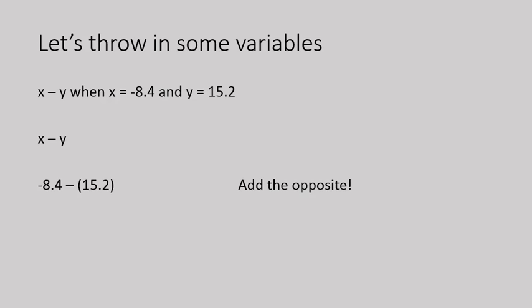When you have a subtraction question, you can always change it into adding the opposite. So instead of negative 8.4 minus positive 15.2, we'll change it to negative 8.4 plus negative 15.2. And now we have an addition question, but we're adding a negative plus a negative, so our answer is going to be an even larger negative number, or in other words, negative 23.6. That'll be our final answer for this question.